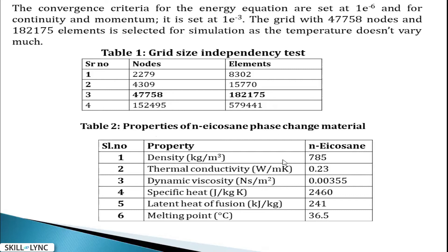The properties of eicosane used here are experimentally determined. Density is 785 kg/m³, and both dynamic viscosity and density are modeled as piecewise linear functions of temperature. Thermal conductivity is also specified. The latent heat of fusion is 241,000 J/kg — very high — and the melting point is 36.5°C. The choice of phase change material for different applications is discussed later.